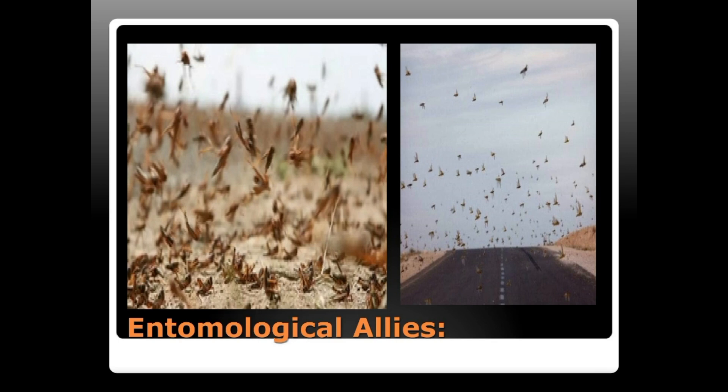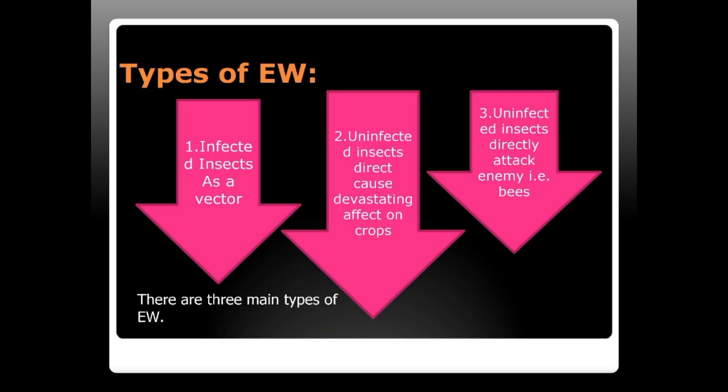There are three main types of entomological warfare: the first is infected insects acting as a vector; the second is infected insects that directly cause devastating effects on crops; and the third is uninfected insects that directly attack enemy combatants.